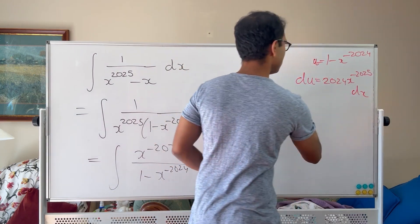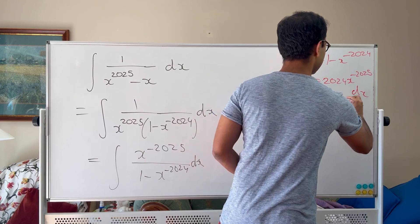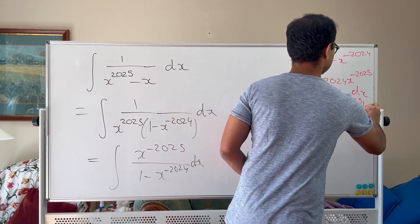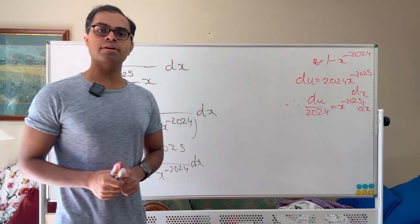And now we can therefore write du over 2024 is going to equal to x to the negative 2025 dx. So just isolating the top times dx and replacing it with something in terms of u.